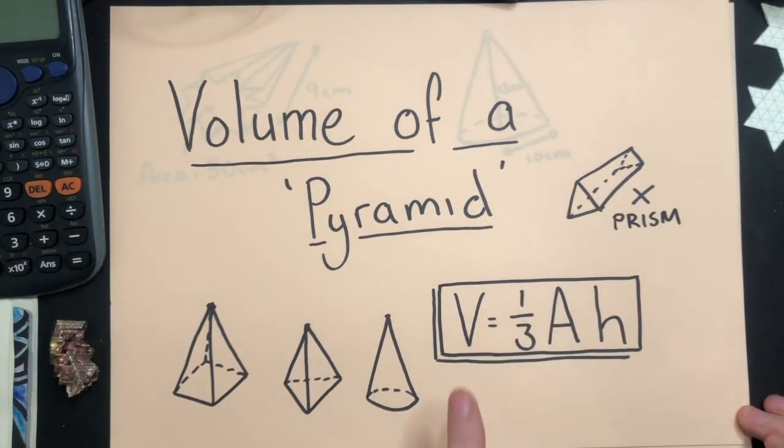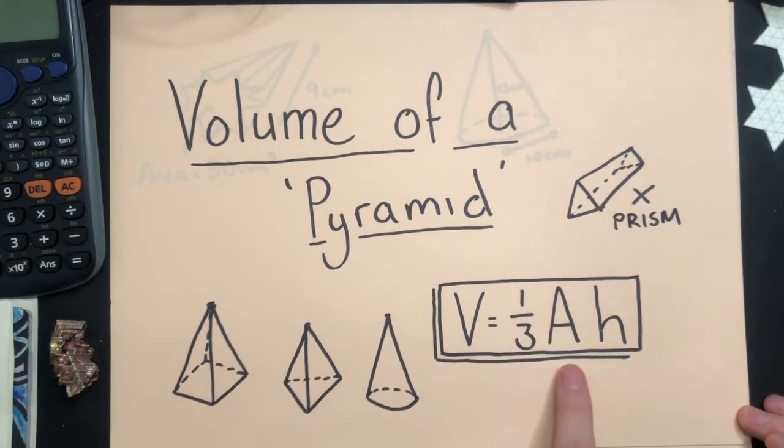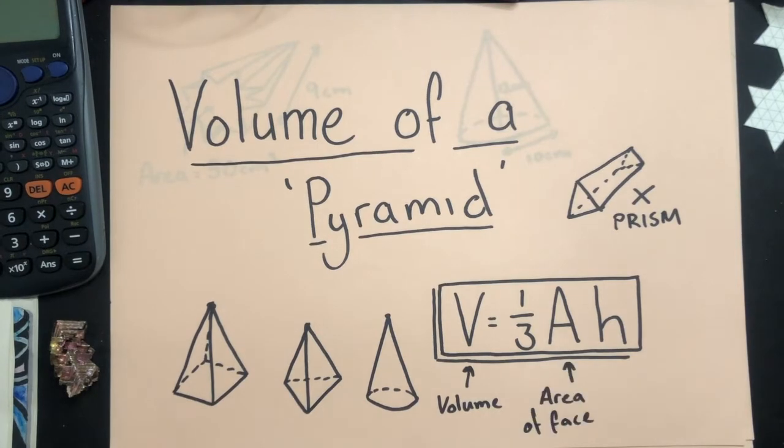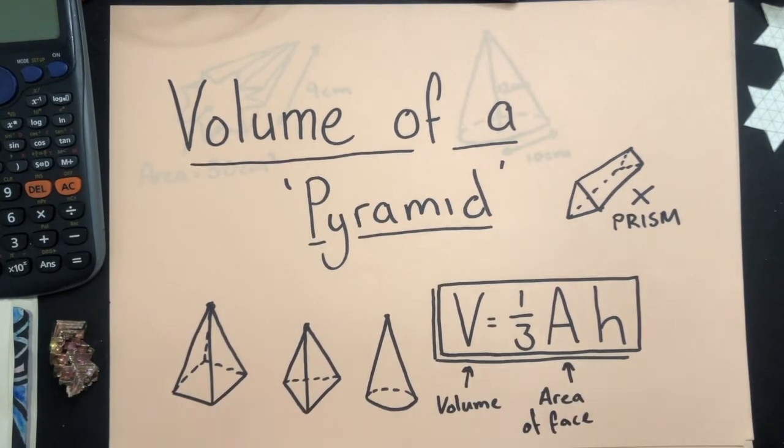The formula for volume of a pyramid is V equals one-third AH. V stands for volume. A is the area of the face, whether it's a square, triangle, circle, anything.